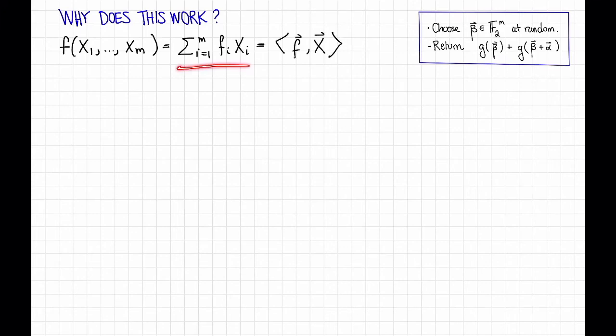That is, f is the sum from i equals 1 to m of fᵢ times xᵢ, which I can write as an inner product between a vector f and the vector x, which contains these variables.